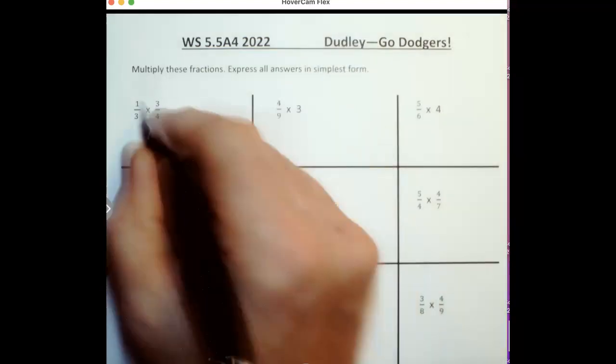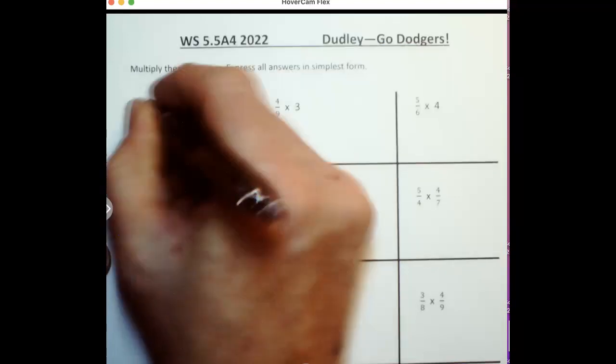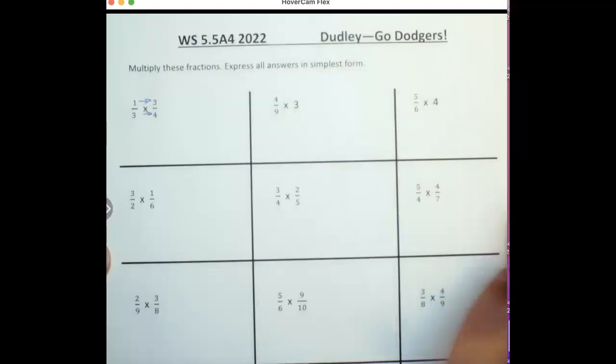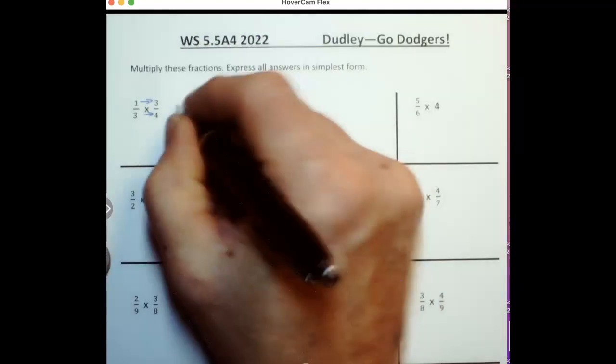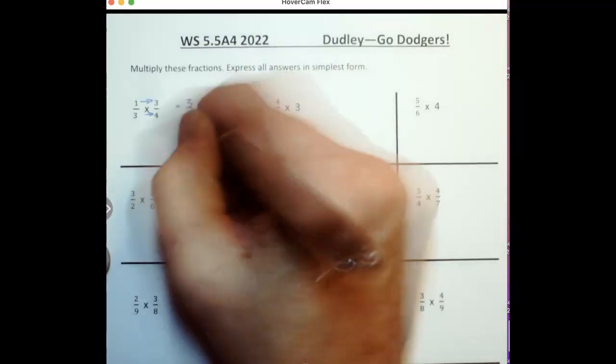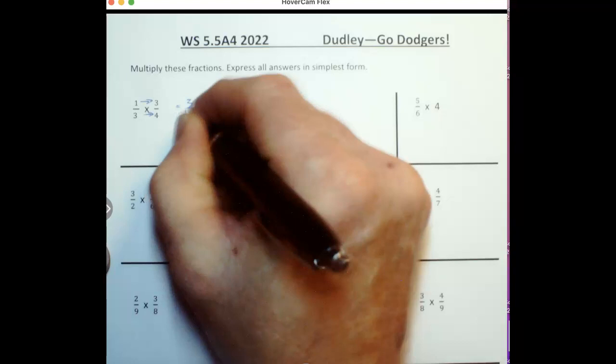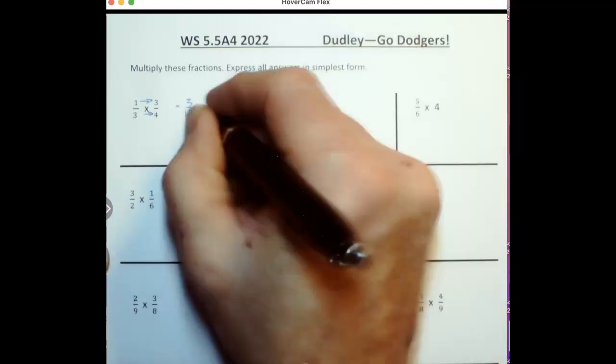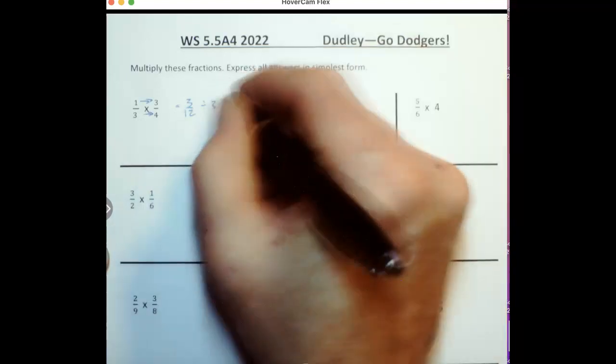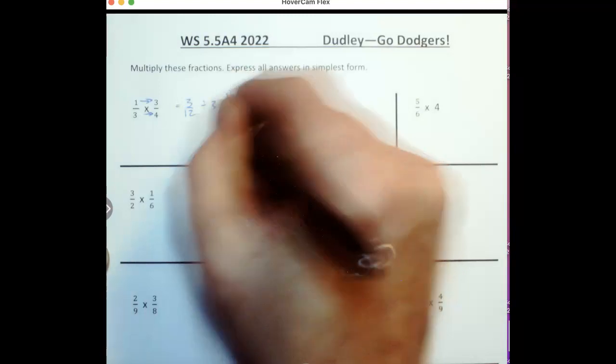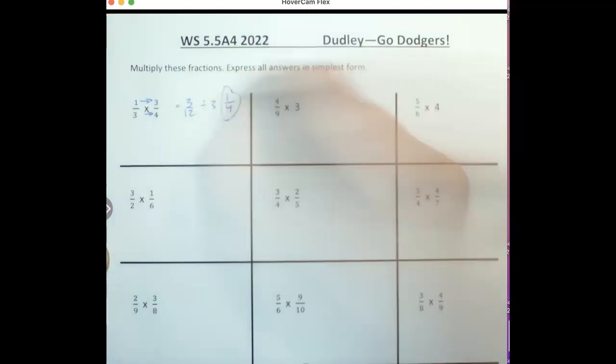So basically when you multiply fractions, you can just multiply straight across. In this case, you can go 1 times 3, this is 3, and 3 times 4, this is 12. Now 3 twelfths can be reduced. You can divide both these by 3. You can get this 3 divided by 3 is 1, 12 divided by 3 is 4, you can get this down to 1 fourth.